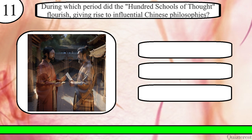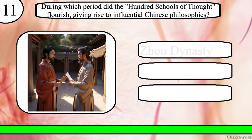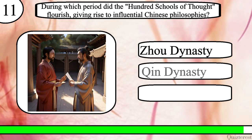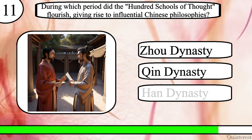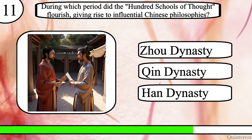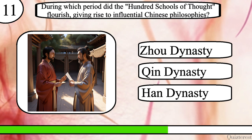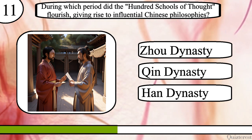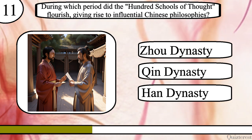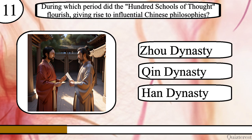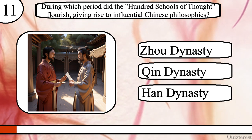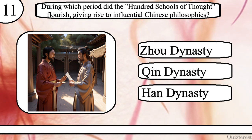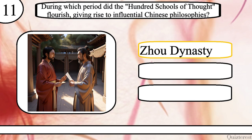Question 11. During which period did the Hundred Schools of Thought flourish, giving rise to influential Chinese philosophies? Zhou dynasty, Qin dynasty, or Han dynasty? The correct answer is Zhou dynasty.